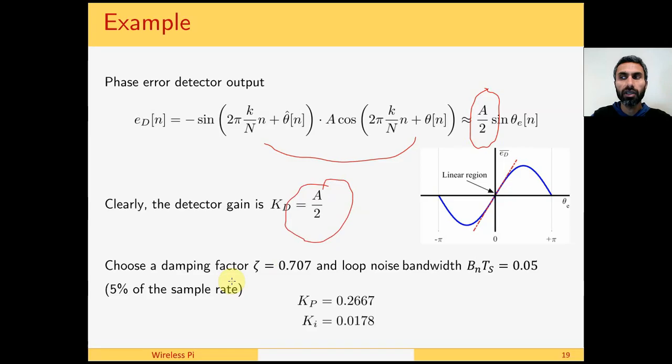Next we choose a damping factor zeta equals 1 over square root 2. We could have chosen another value. And the loop noise bandwidth is 5% of the sample rate. When these values are plugged in Kp and Ki, we get these values which complete our PLL design procedure.